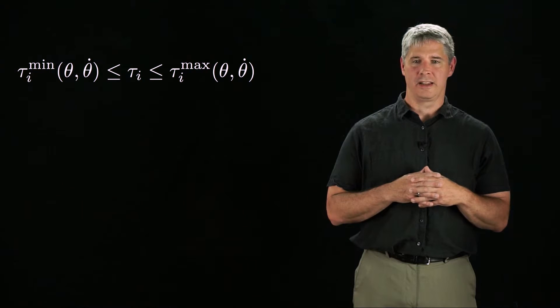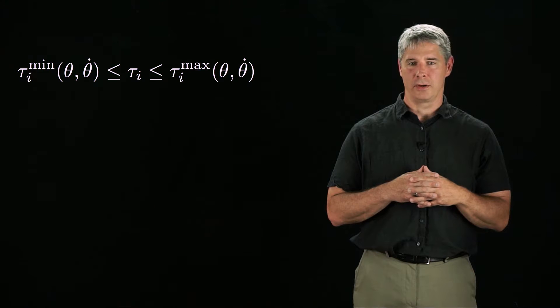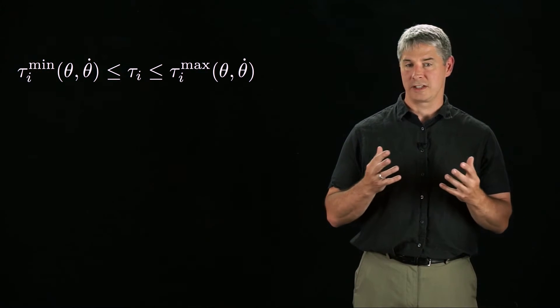But in general, the limits are a function of theta and theta dot. In particular, the maximum torque that can be produced by an electric motor typically decreases as the velocity increases, until eventually it becomes zero.